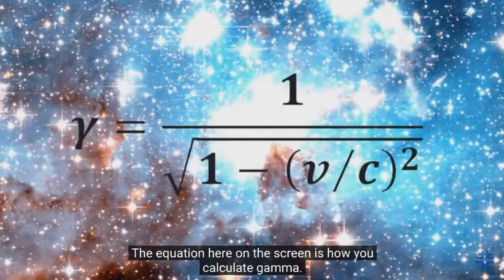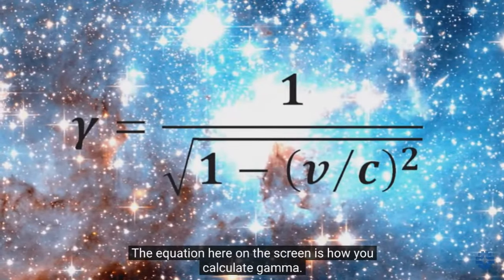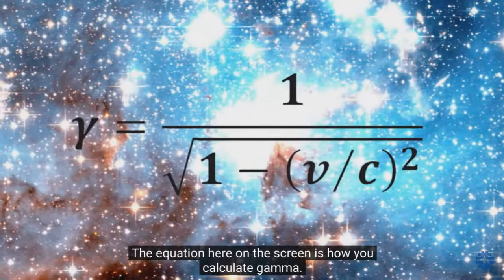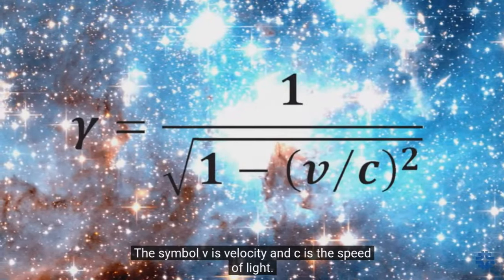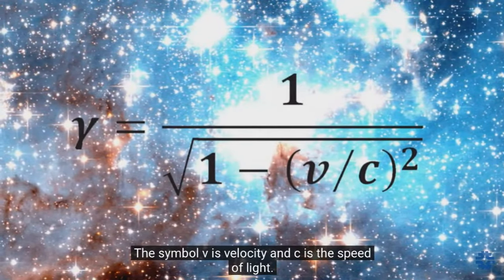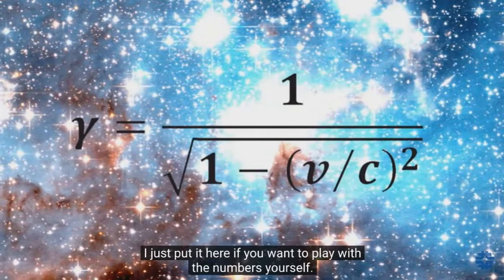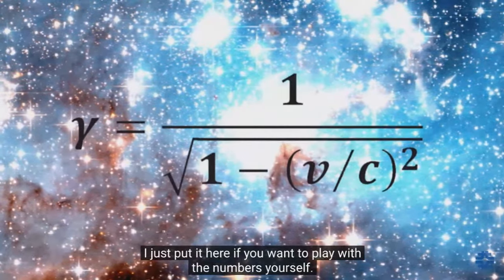The equation on the screen is how you calculate gamma. The symbol V is velocity and C is the speed of light. I put it here if you want to play with the numbers yourself.